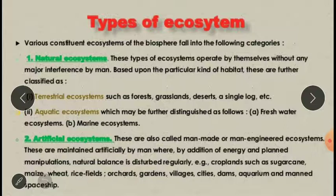Coming to the next part, the main part of the lesson — the types of ecosystem. We can see there are different types of ecosystems present because our earth has different climatic conditions in different areas. If we categorize it, it can be a mega ecosystem, macro ecosystem, meso ecosystem, or micro ecosystem.